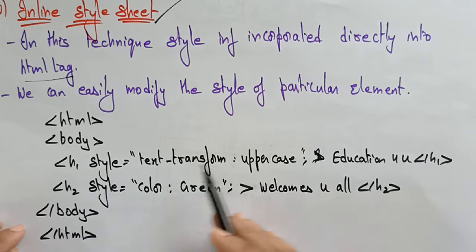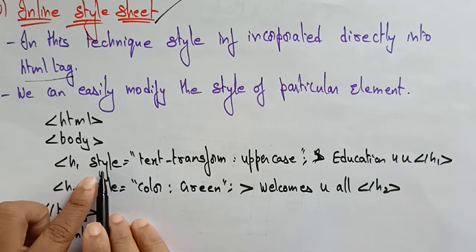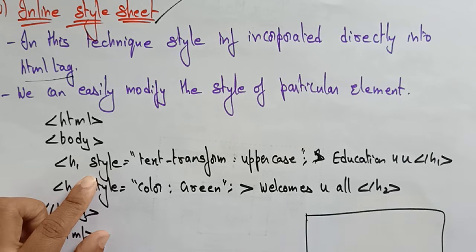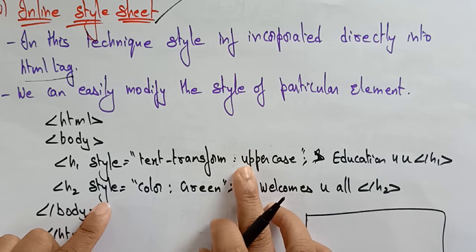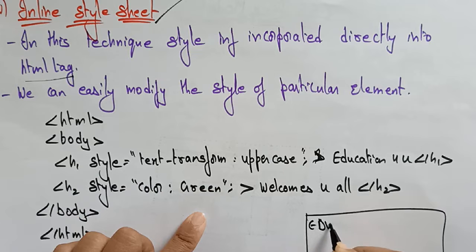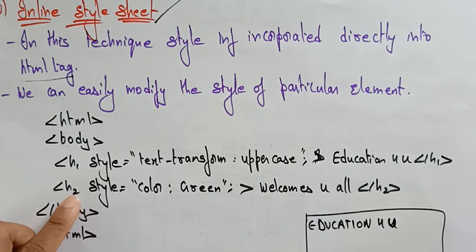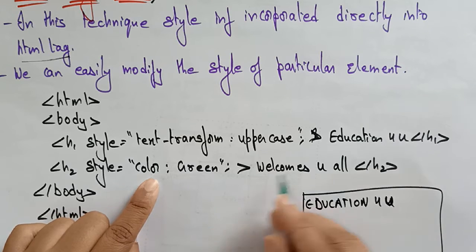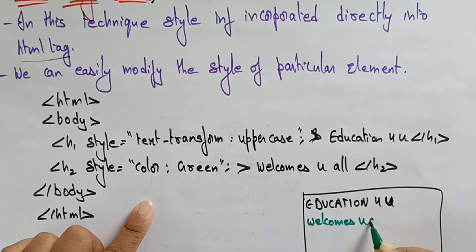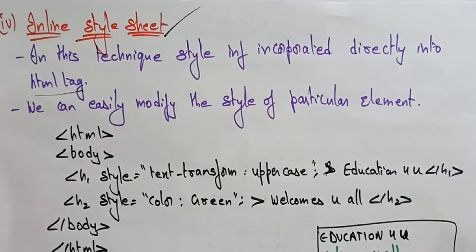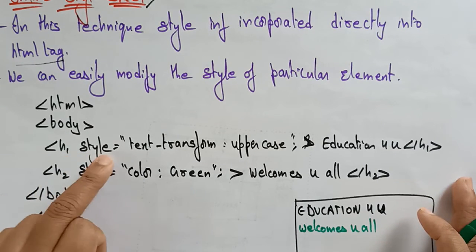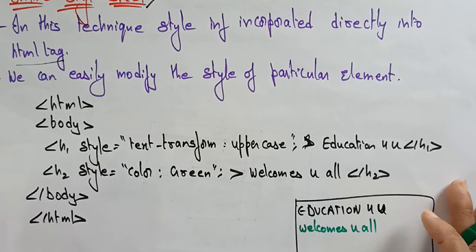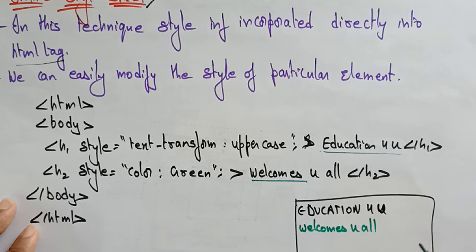Here we are not using the style tag. In the body, within H1, style is equal to text-transform uppercase. So all letters should be uppercase — 'Education For You'. No alignment was given by default. For H2, the style color is green — 'Welcomes You All'. So this is the output for the inline style sheet. Instead of a style tag, I am writing style equal to text-transform and style equal to color green directly in the tag. Whatever message is written between the H1 or H2 tags will appear with the specified style.